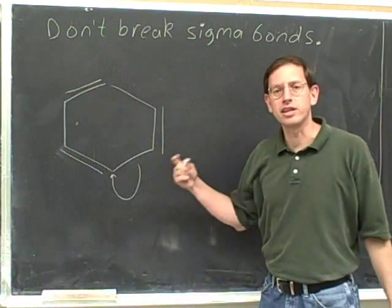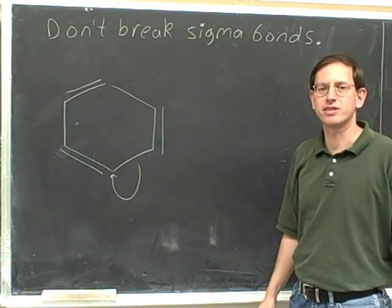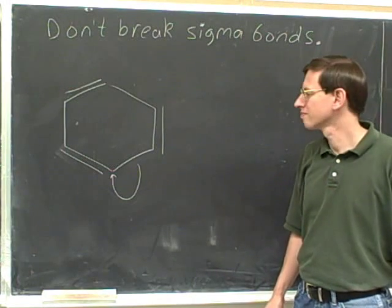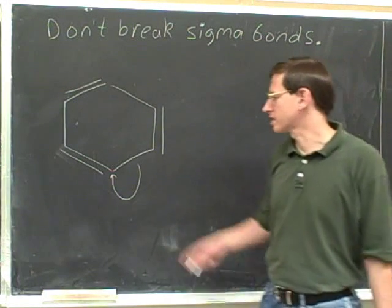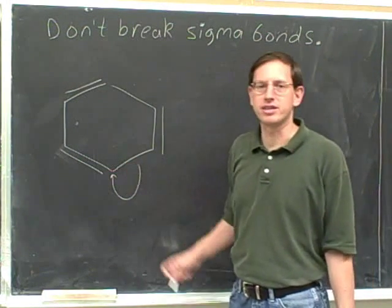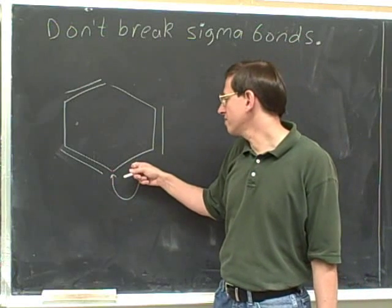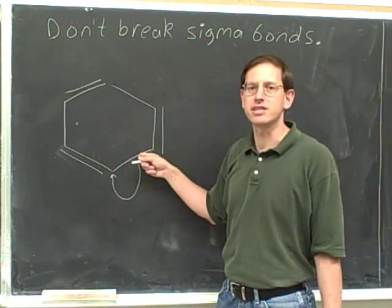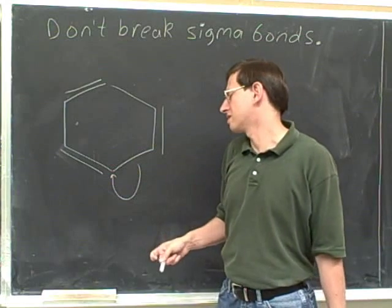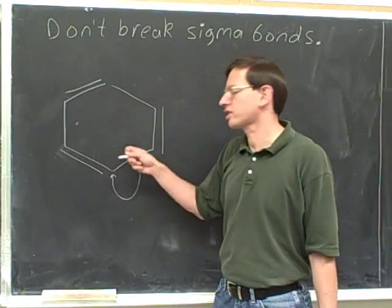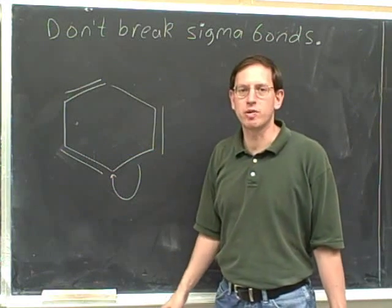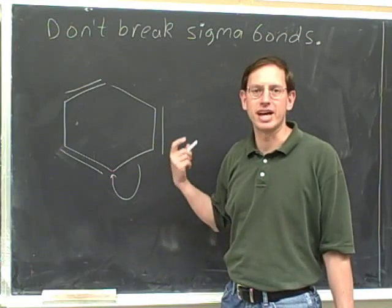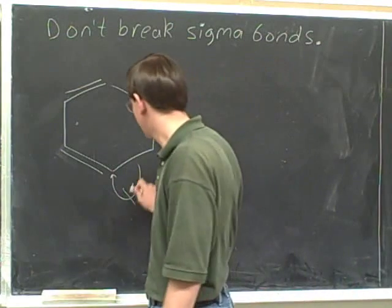Is this a legal electron-pushing arrow for resonance? No, because it would involve breaking the sigma bond. Notice that the tail of this arrow is on the sigma bond, so it means we have to move the electrons out of the sigma bond, which involves breaking it. You're not allowed to do that in resonance — so this is illegal.